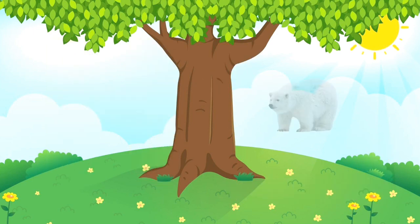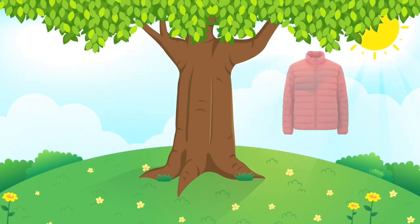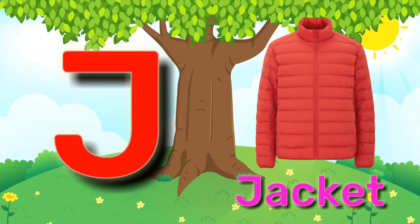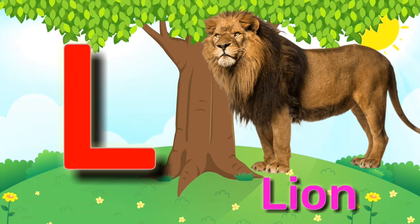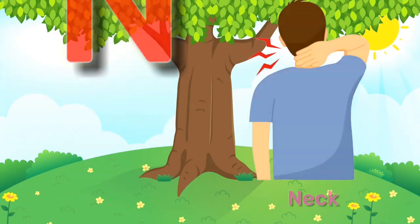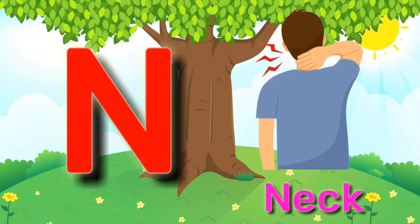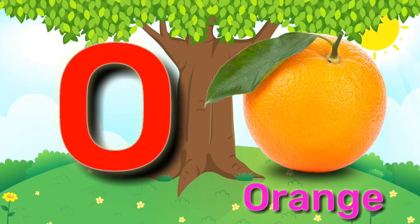I for iceberg, J for jacket, K for king, L for lion, M for mouse, N for neck, O for orange.